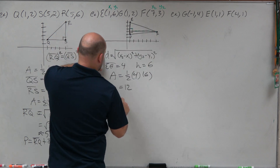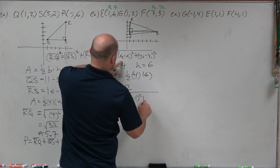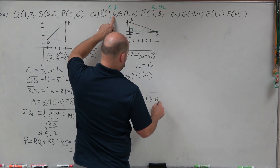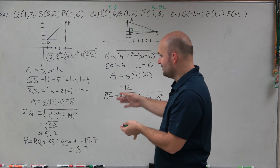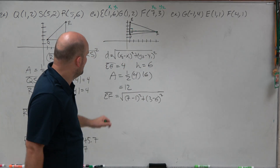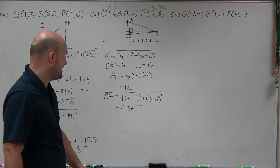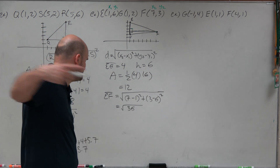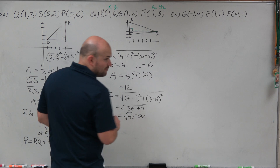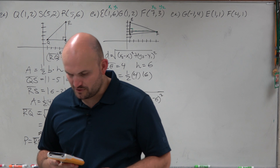For side EF, using E as (x1, y1) and F as (x2, y2): EF equals the square root of (7 minus 1) squared plus (3 minus 6) squared. Seven minus 1 is 6, and 6 squared is 36. Three minus 6 is negative 3, and negative 3 squared is 9. So that equals the square root of 45, which we approximate to the nearest tenth as 6.7.